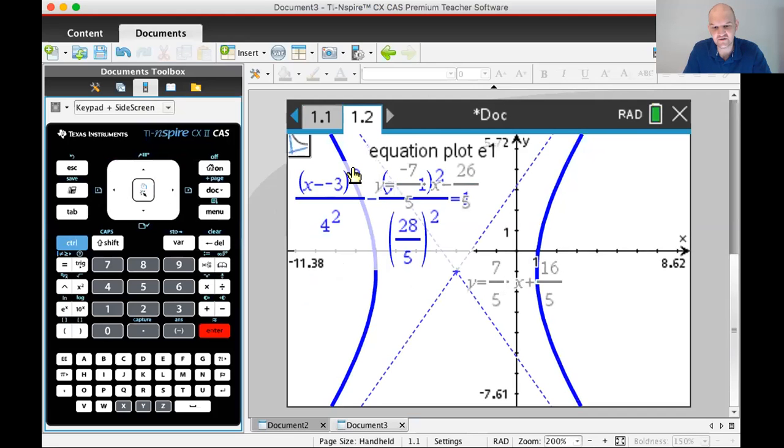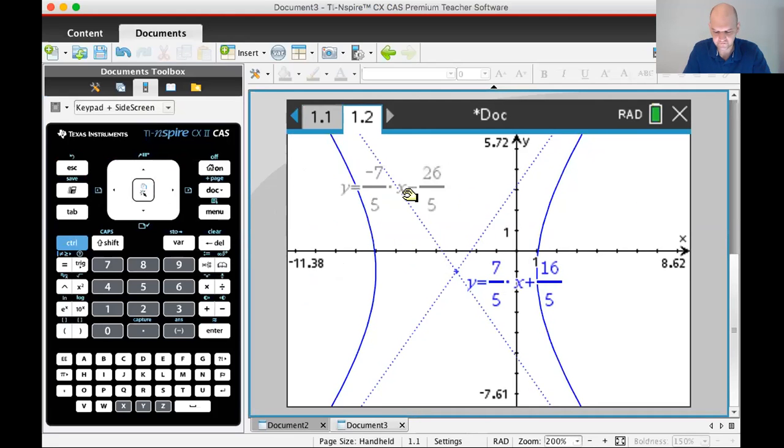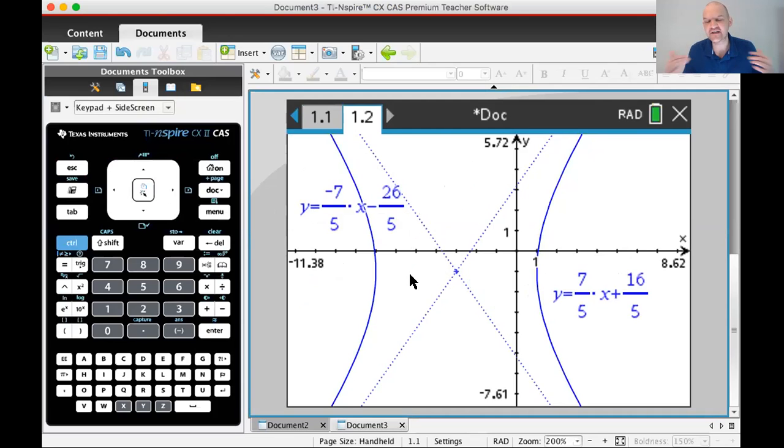The problem is it's not going to give me those in point slope form. And so if you really wanted to, you'd have to solve this and that would be annoying. Or you can just look and be like, well, if I distribute 7/5, I get 21/5. And then if I subtract 5 from that, I get -26/5. If I distribute negative 7/5 with this, I get -21/5 and then I subtract, I get -26/5. Yeah. I think it's right.